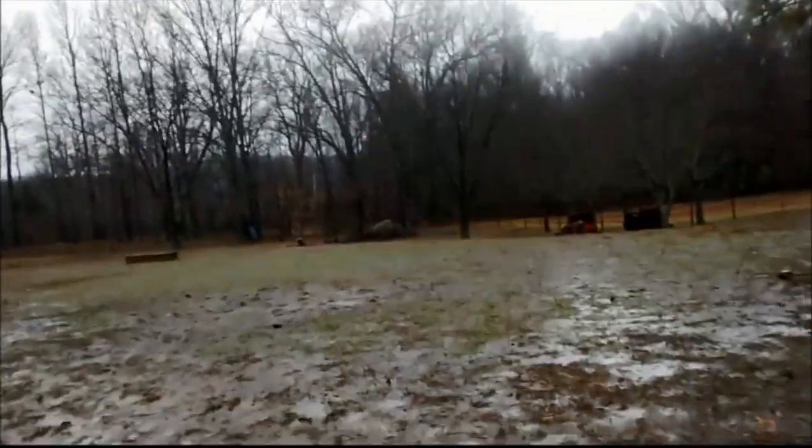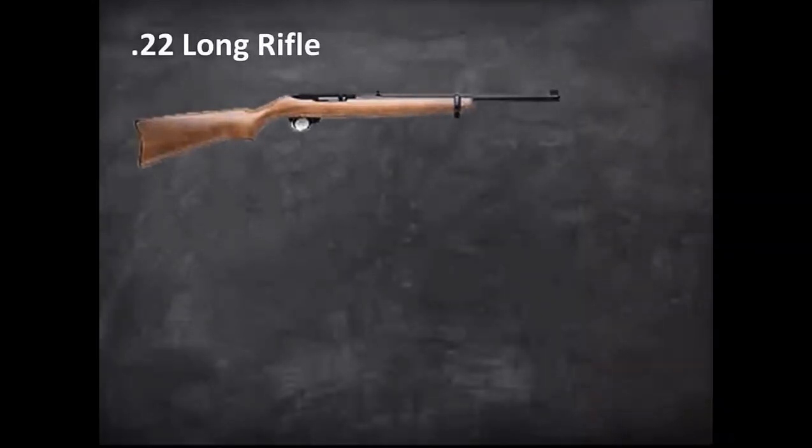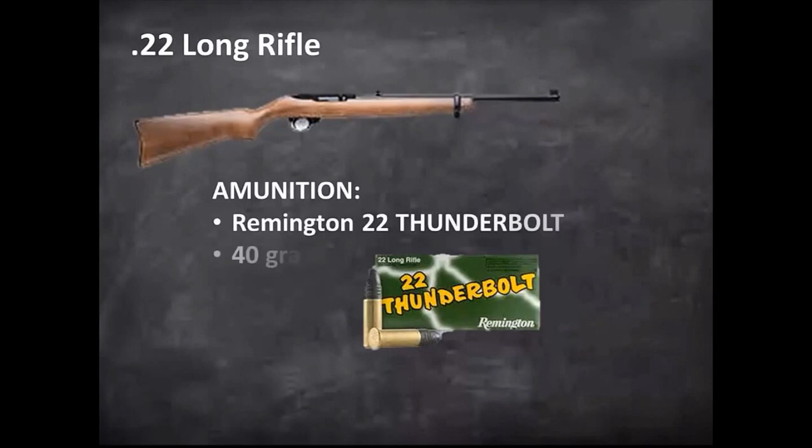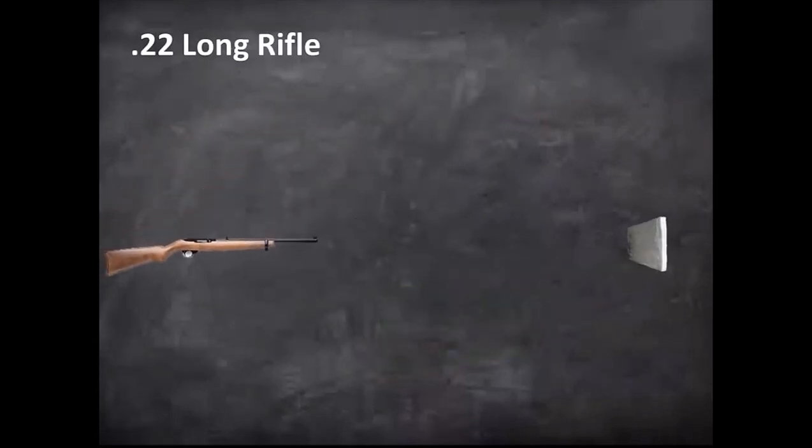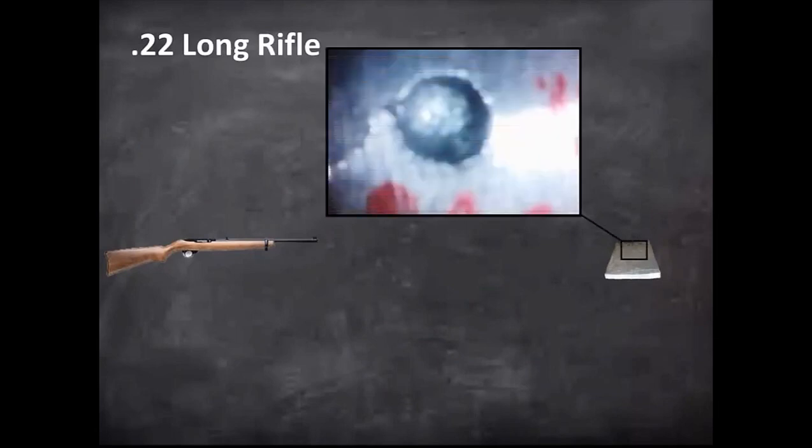That was a .22 long rifle firing Remington .22 center bolt ammunition. Each one of these bullets weighed 40 grains and had a muzzle velocity of 1,255 feet per second. So what happened when they shot the plate? It turns out all the data we need for further calculations can be found right here in the impact crater. Let's examine this a little more closely.